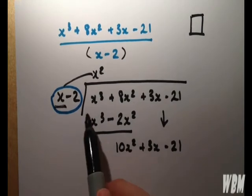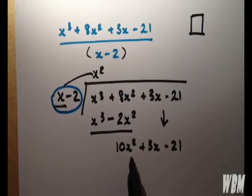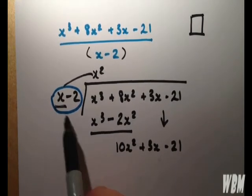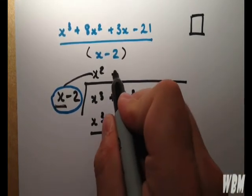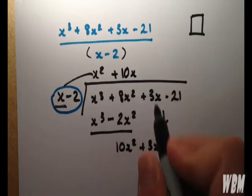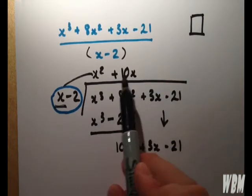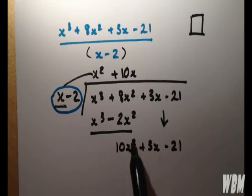And quite simply, we repeat the first step on 10x squared. So we divide the x into 10x squared, and we get 10x. Because 10x times by x is 10x squared.